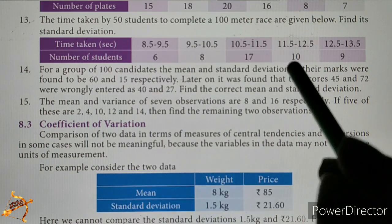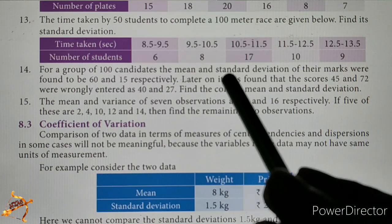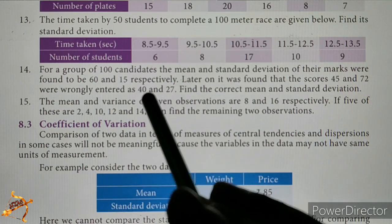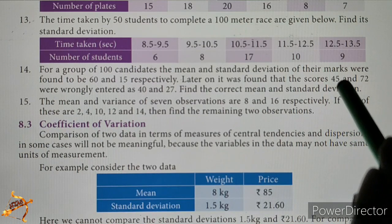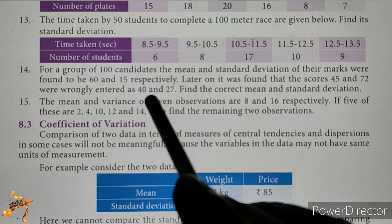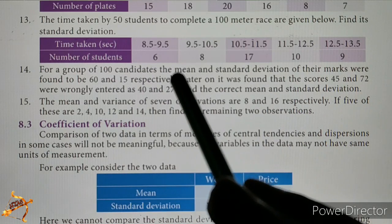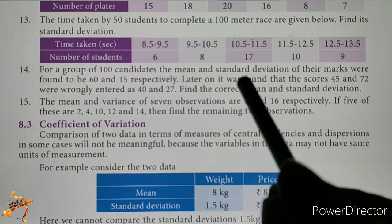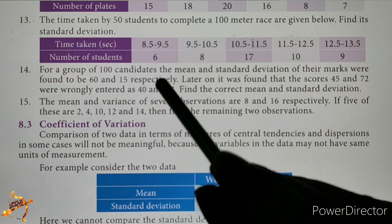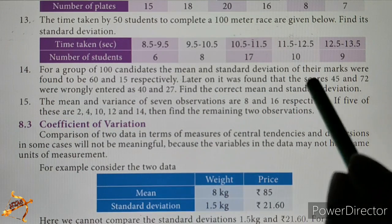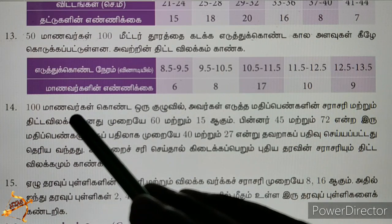For 100 candidates, the mean and standard deviation are given. We replace the incorrect values with the correct ones — 45 and 72 instead of 40 and 27. From this, we will find the correct mean and standard deviation. There are 100 candidates total.